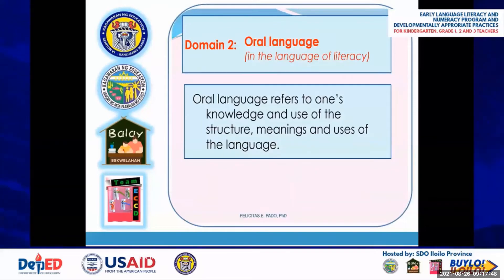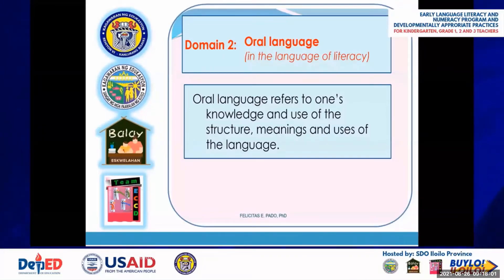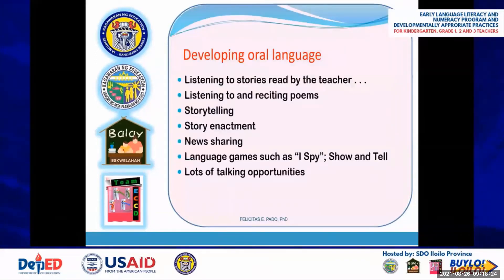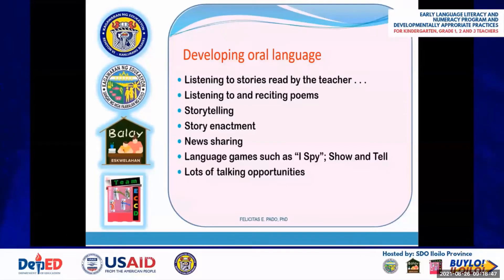At the emergent literacy stage, we also expect the child to develop oral language — domain 2 — in the language of literacy. Oral language refers to one's knowledge and use of the structure, meanings, and uses of language. Literacy development depends on oral language development; one cannot be successful in learning to read and write in a language they do not understand. Oral language is developed through listening to stories, reciting poems, storytelling, story enactment, news sharing, language games such as I Spy, Show and Tell, and lots of talking opportunities.